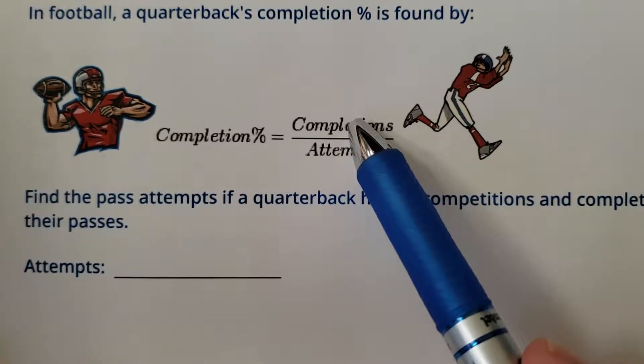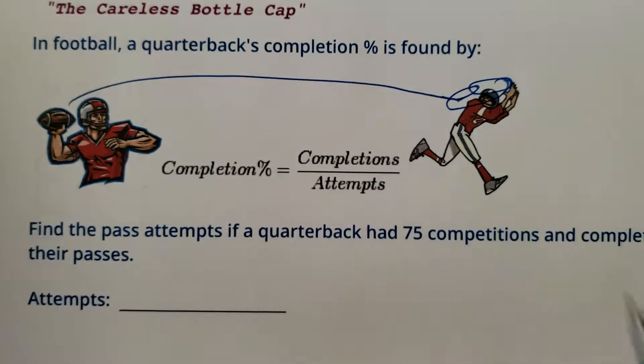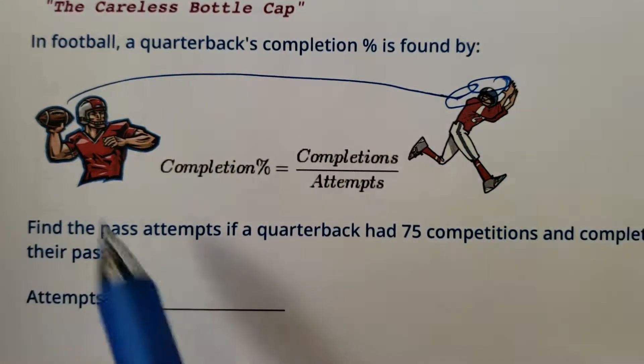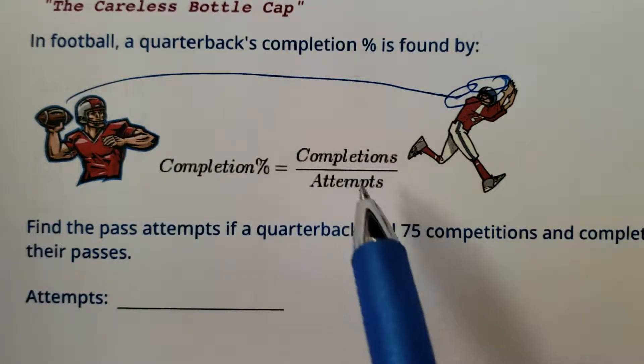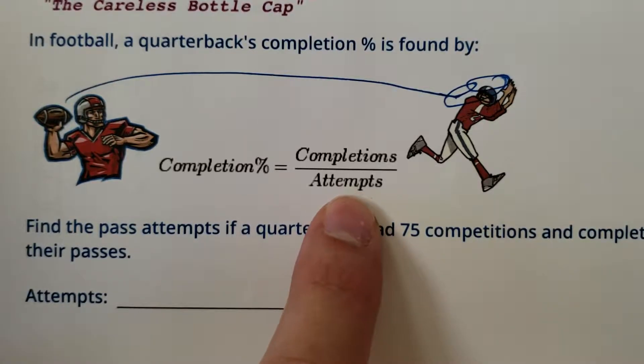So how many catches? Completions. So a completion is when quarterback throws, receiver catches it. Boom! Right in the hands. And then everything that isn't a completion would be a drop or an interception. But you divide by the total attempts.